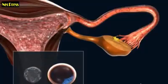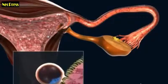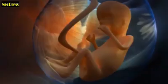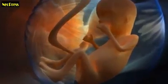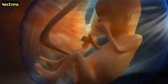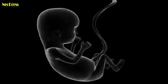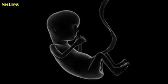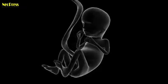This makes a permanent connection between the woman and the embryo. This forms an organ called the placenta, which allows oxygen and nutrients to pass from the woman to the embryo, and the pregnancy continues.